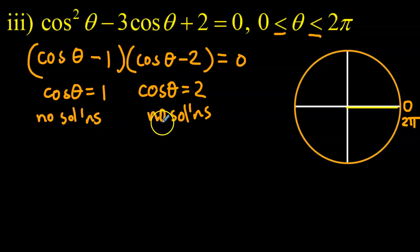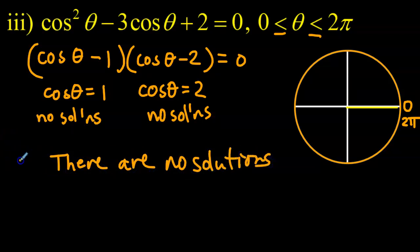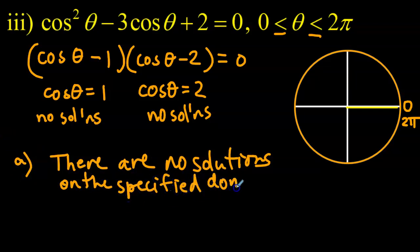So how do we type this out? I guess we can just go, there are no solutions. This is part A, by the way, on the specified domain. Okay, fabulous.